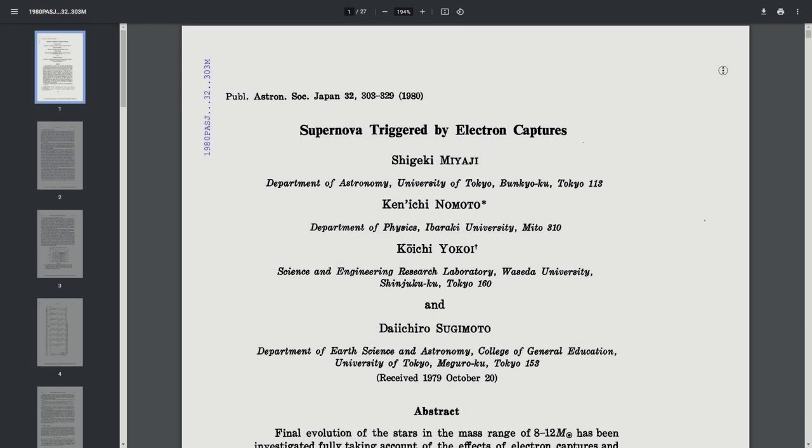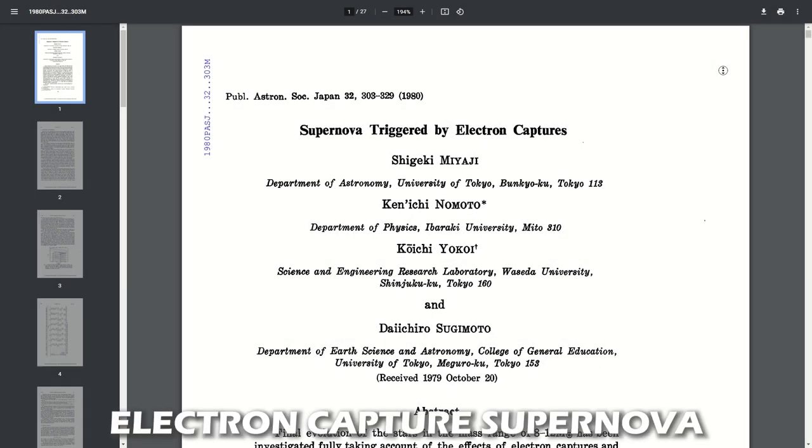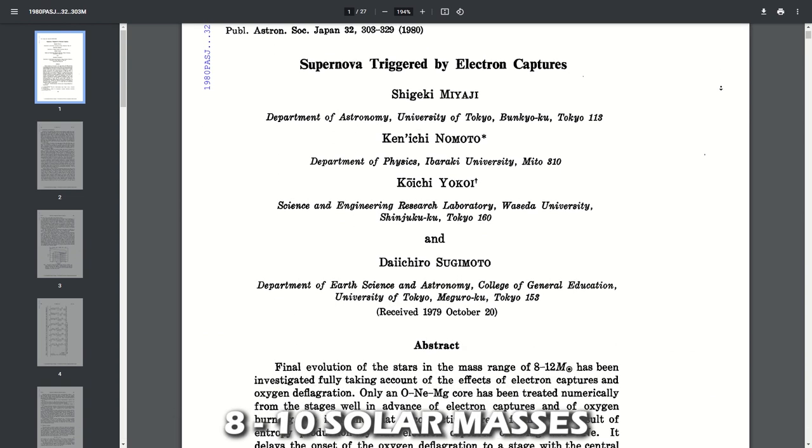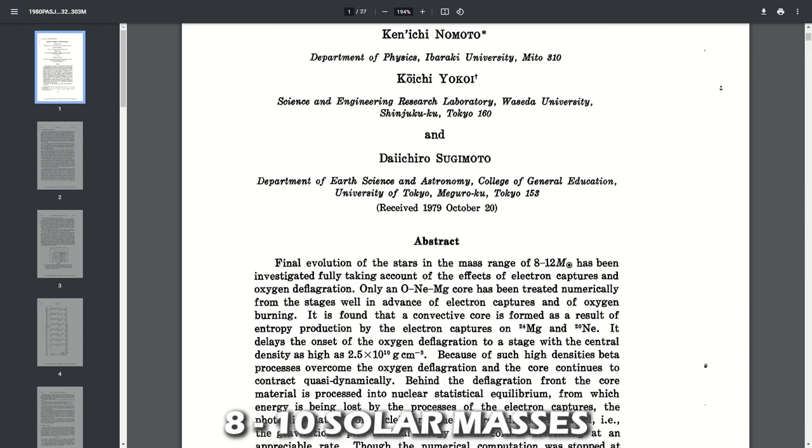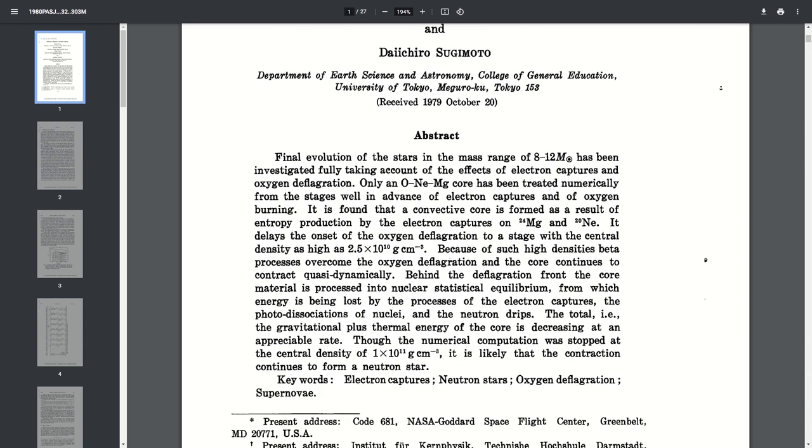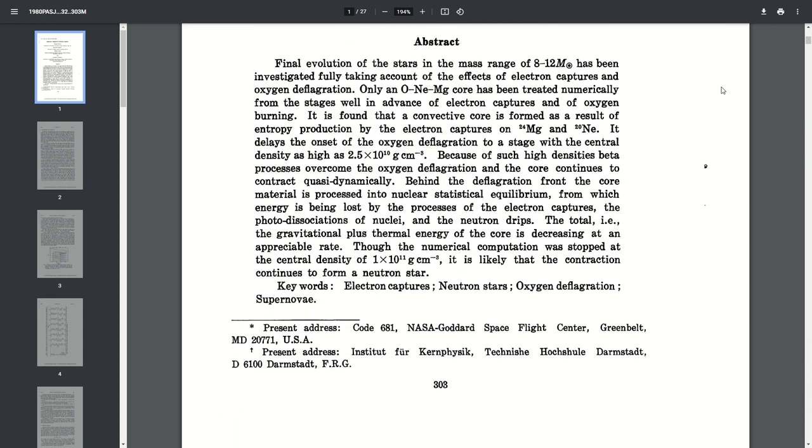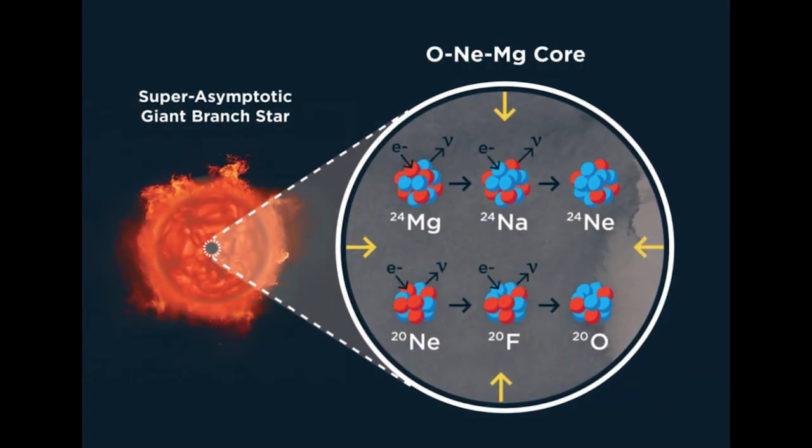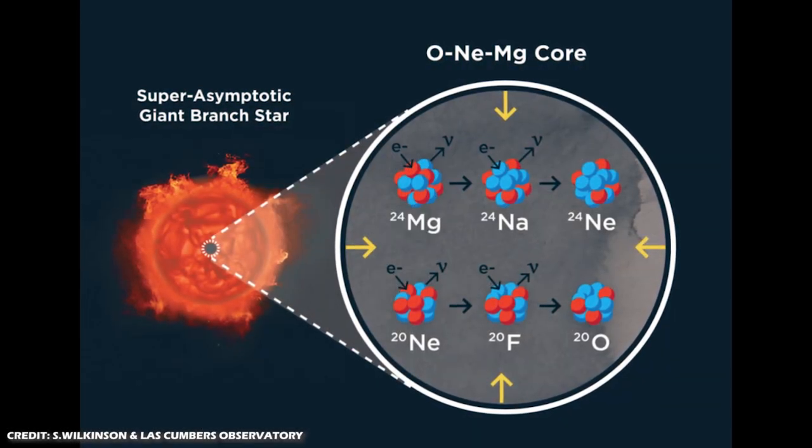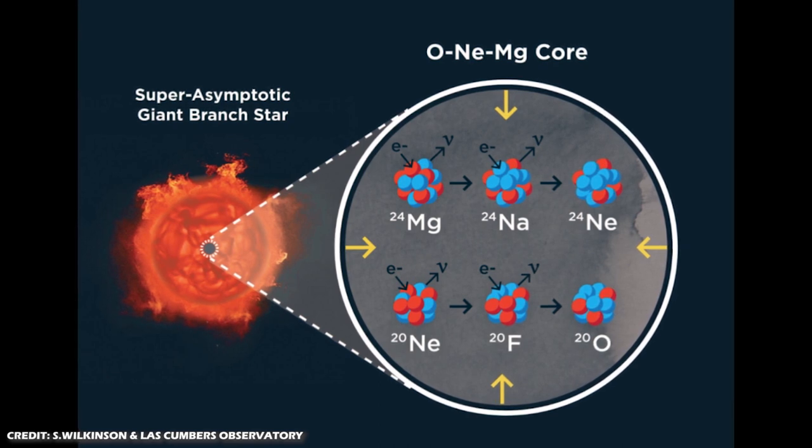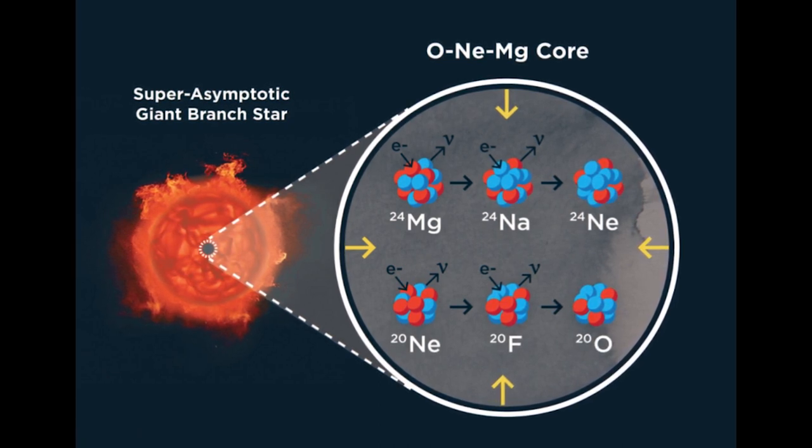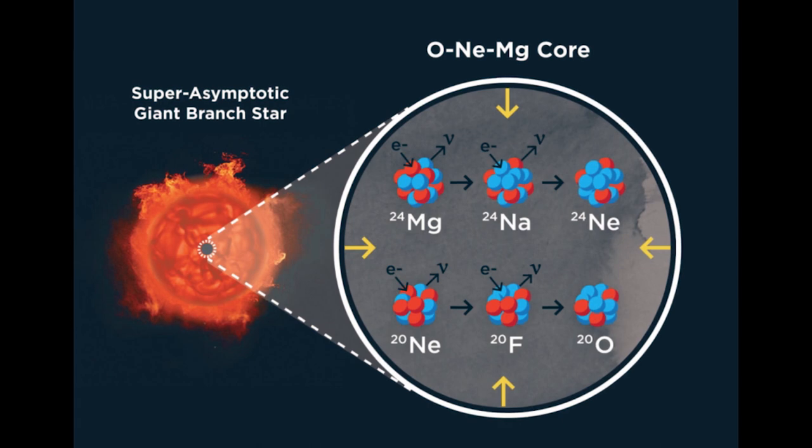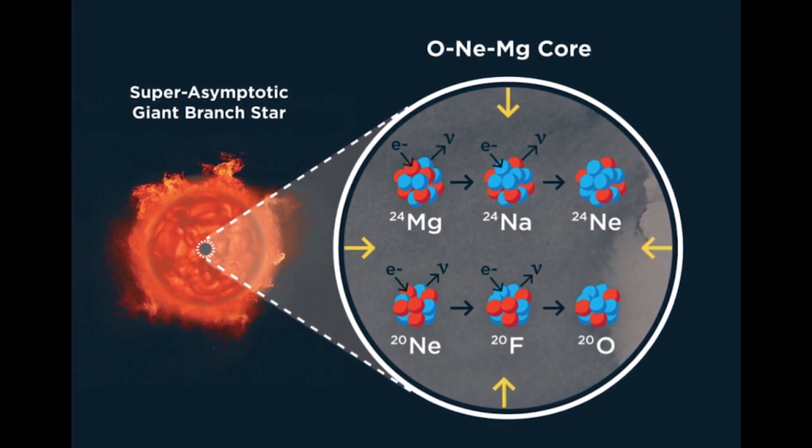A third type of supernova was theorized back in 1980, called an electron capture supernova, that should occur in stars in a narrow mass range of 8 to 10 solar masses. Electron capture supernovae also produce neutron stars like some Type 2 supernovae. But before the star can die, magnesium and neon atoms that have piled up in its core begin capturing free floating electrons around them, which are responsible for the outward pressure keeping the star's core stable.